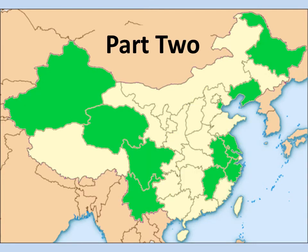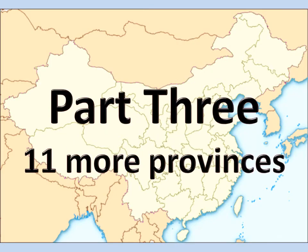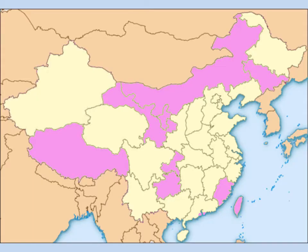Part 2 added 11 more areas, many named for specific rivers or lakes. In Part 3, we will learn the remaining 11 administrative areas. The names of most of these are linked to history rather than geographic features.